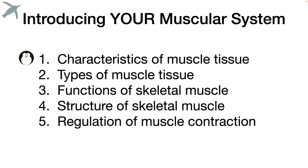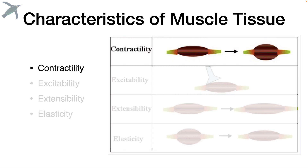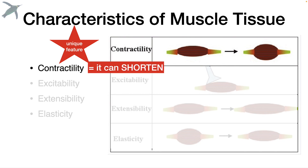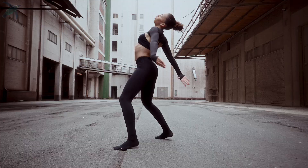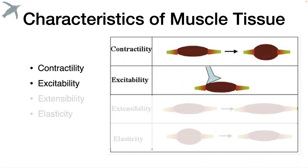First of all, the characteristics of muscle tissue. There are four. The first one is the unique feature, meaning you only find this characteristic in muscle tissue, and that's contractility, which means muscle tissue can shorten. That's how it moves. So when you see things in the body that are moving, that's muscle.